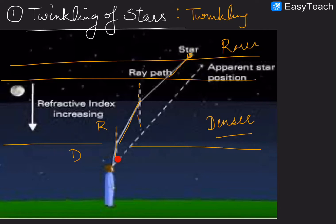The star's apparent position is slightly shifted from its actual position. Also, the temperature of the Earth's atmospheric layers keeps changing, which causes the star's apparent position to keep shifting — resulting in the twinkling of stars due to atmospheric refraction.